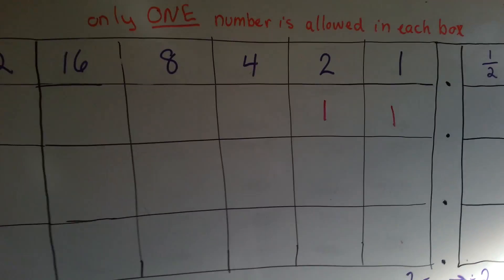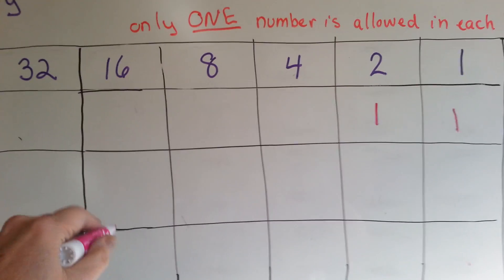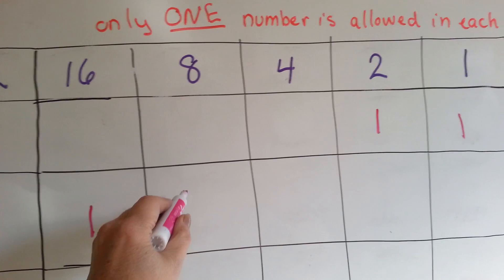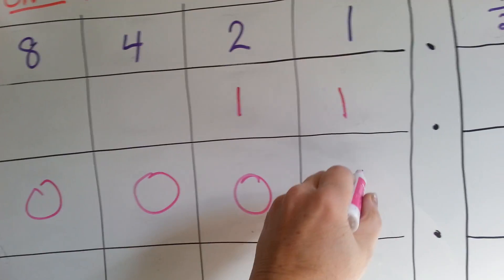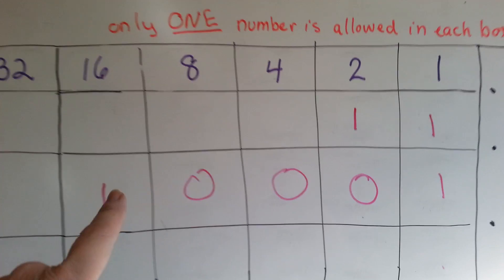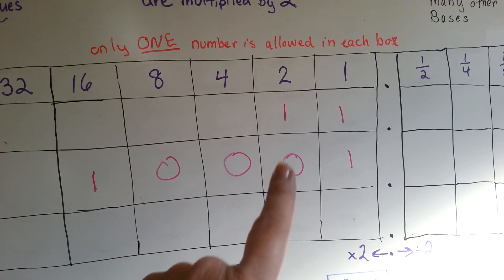What if you wanted to write the number 17? You would use 1 of the 16s, no 8s, no 4s, no 2s, but you would use a 1. So, the number 17 would be 1, 0, 0, 0, 1.